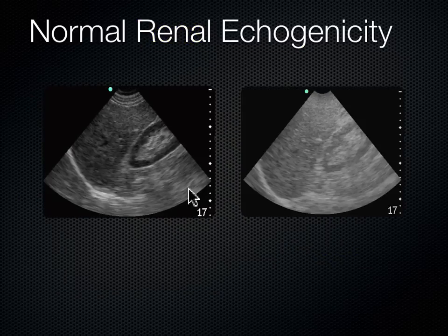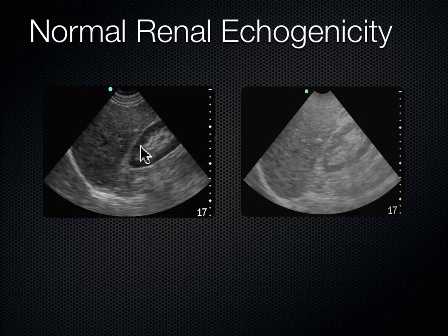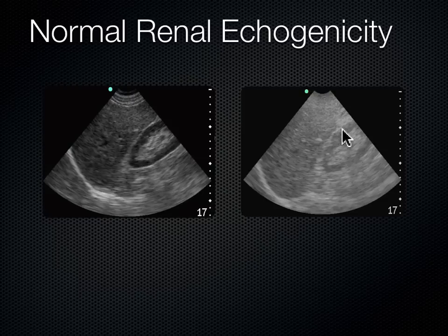Looking at these two images — they both range down to 17 centimeters depth, but the difference is the gain. The right image is over-gained, pretty washed out. In the left image, the cortex of the kidney is slightly darker than the liver — which is what we want. If you can make out those subtleties, your gain is adjusted just right. When over-gained, it's hard to distinguish that the cortex is less echogenic than the liver. I know my gain is set right when the kidney's cortex looks darker than the liver or spleen.